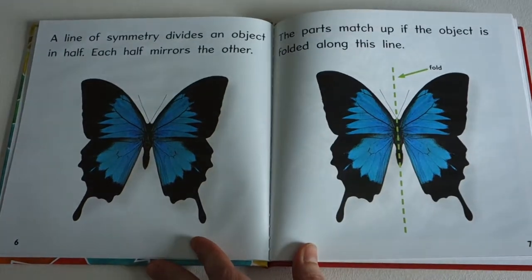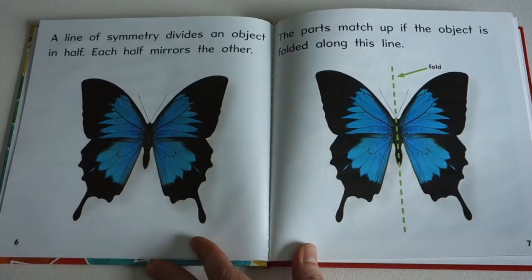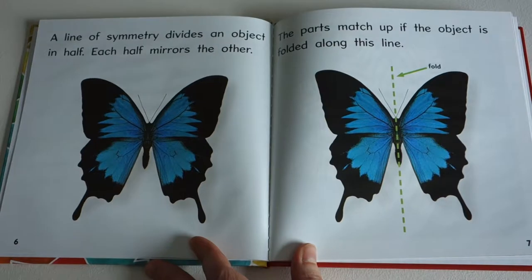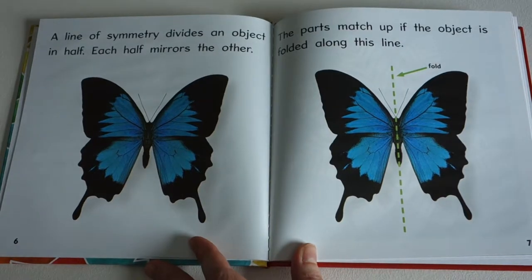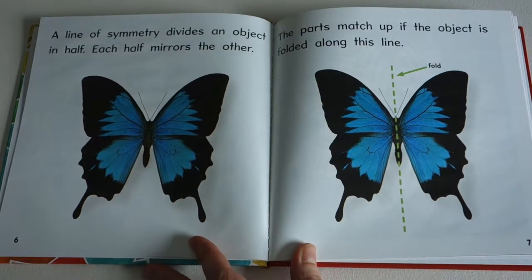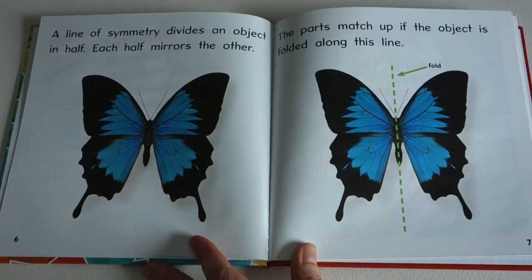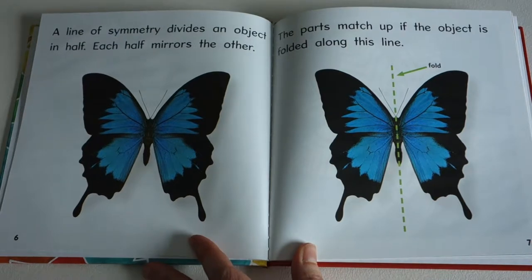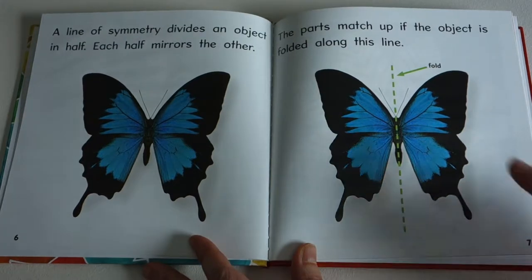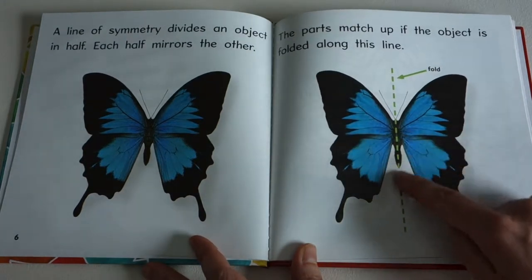A line of symmetry divides an object in half. Each half mirrors the other. The parts match up if the object is folded along this line. Fold.